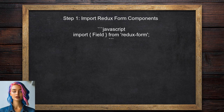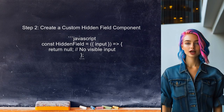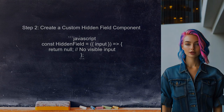To set hidden fields in Redux form within a React Native application, start by importing the necessary components from Redux form. This includes the Field component, which is essential for creating form fields. Next, define a custom component for the hidden field. This component will not render any visible input, but will still hold the value in the form state.